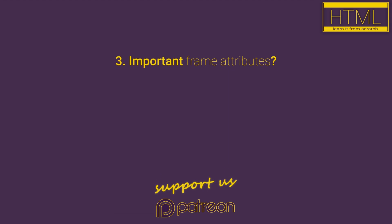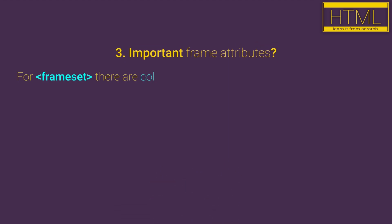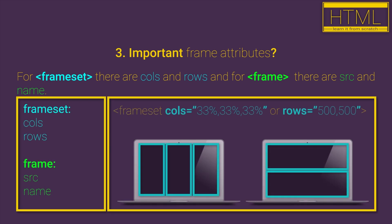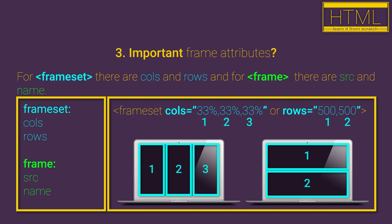What are important frameset attributes? For the frameset HTML element there are cols and rows HTML attributes, and for the frame HTML element there are src and name HTML attributes. With cols and rows attributes used for frameset, we define whether we are going to divide our screen into columns or into rows. The values, separated by commas, represent the number of columns or rows we will have inside our screen.